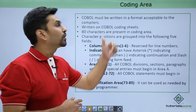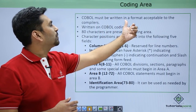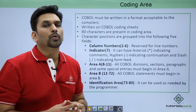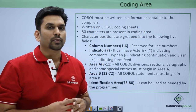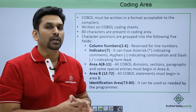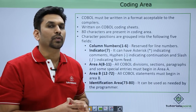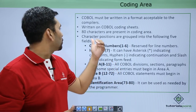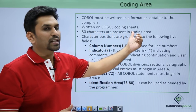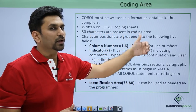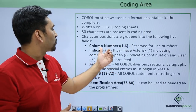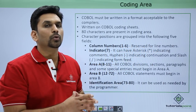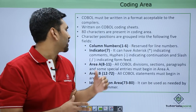Now we will start with coding area. COBOL must be written in a format which is acceptable to compilers. COBOL programs are written in PDS members which are declared with a record length of 80 bytes, because the compiler understands only 80 bytes. So we have 80 characters present in the coding area. Column numbers 1 to 6 are reserved for line numbers — you do not need to change them, they come automatically.